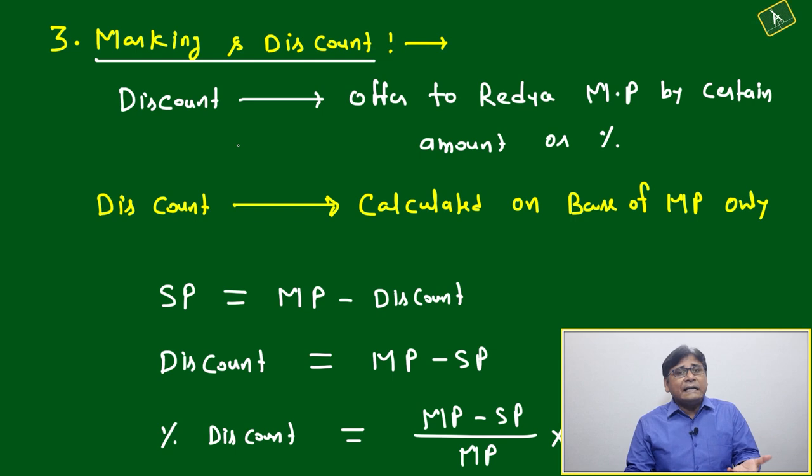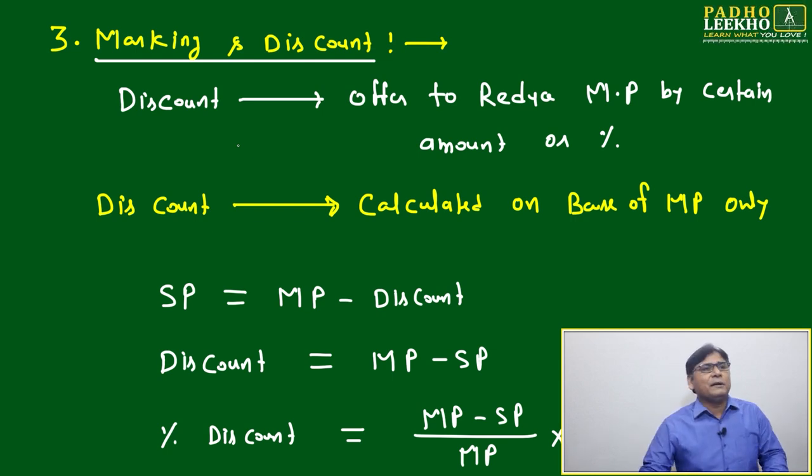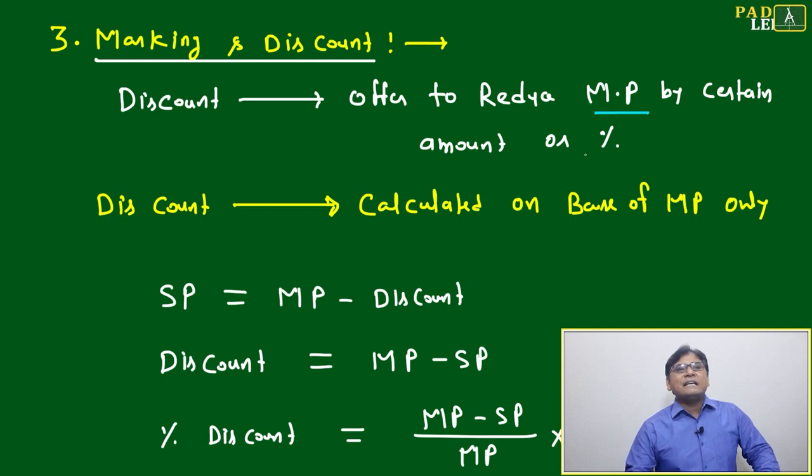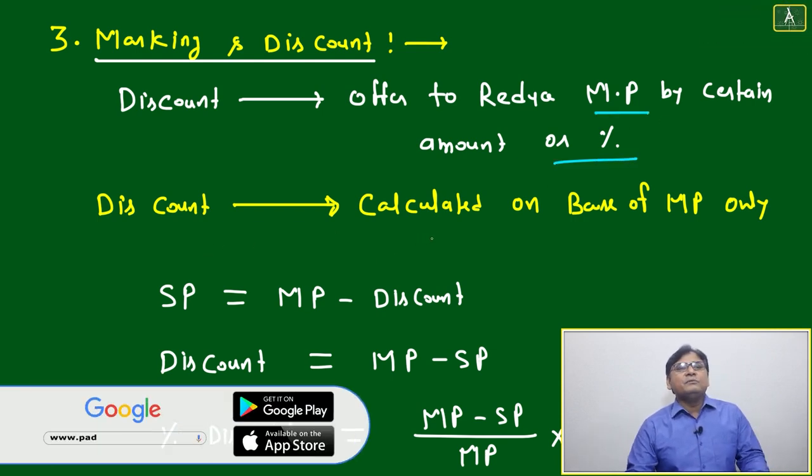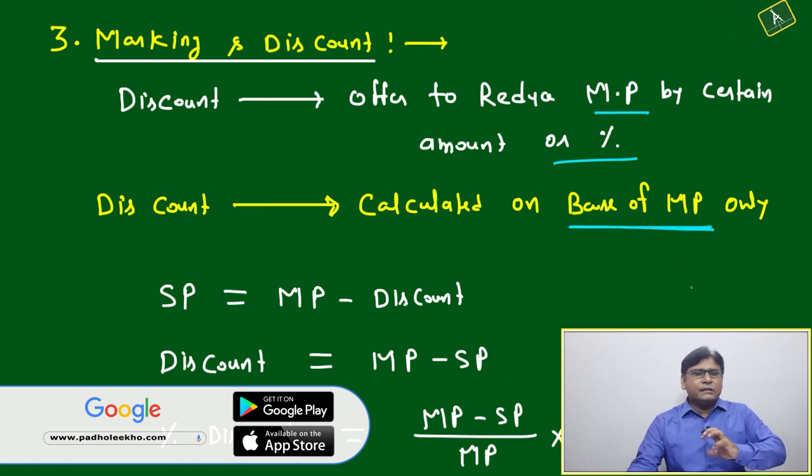Still your intention is to make profit. Discount is an offer to reduce marked price by certain amount or percentage. Discount will always be calculated on the base of marked price.